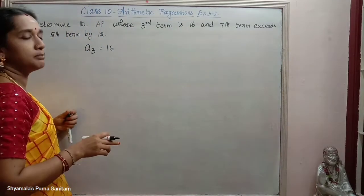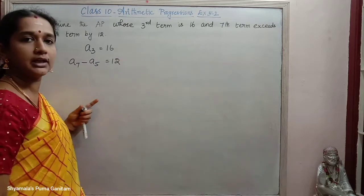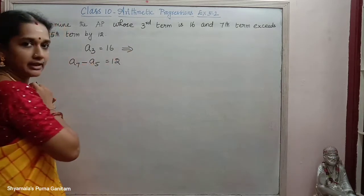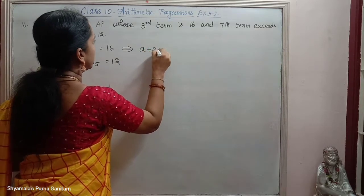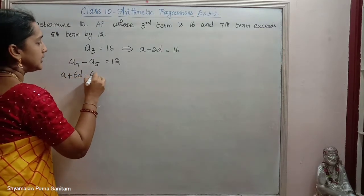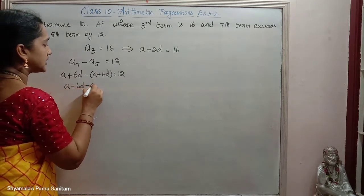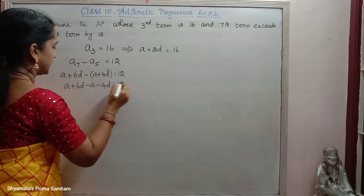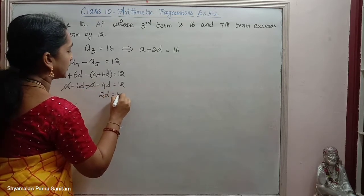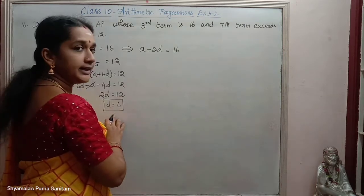The 7th term exceeds the 5th term by 12, so the difference between them is 12. Writing condition 1: A plus 2D equals 16. Condition 2: A plus 6D minus A plus 4D equals 12. Expanding: A plus 6D minus A minus 4D equals 12, so A minus A cancels and 2D equals 12, giving D equal to 6.